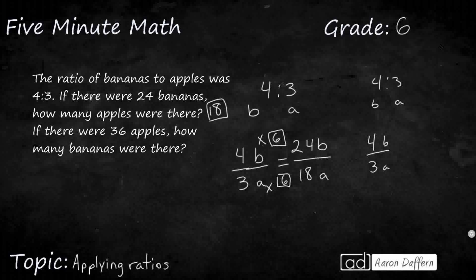4 bananas, 3 apples. But in this case, I don't know how many new bananas there are. I do know that there are 36 apples. I'm looking for those bananas. So 3 times what gets me 36? Well, that's going to be times 12, which means I'm going to multiply that by 12, which means that's 48. So if there were 36 apples, there would be 48 bananas.